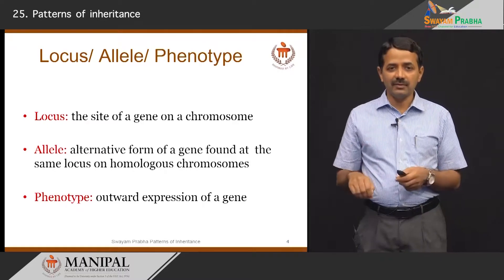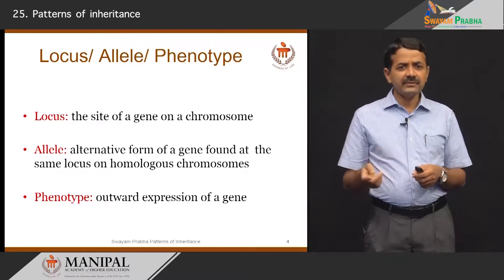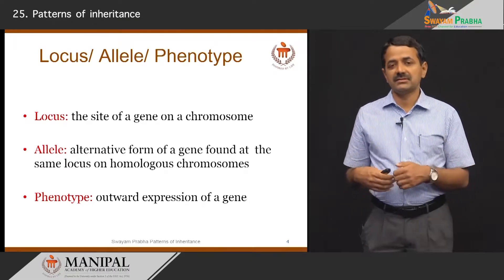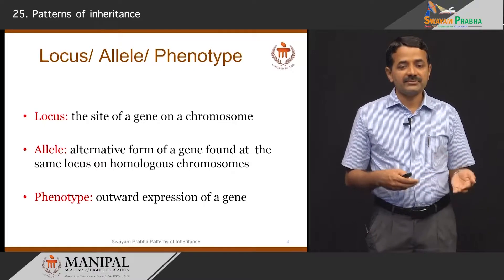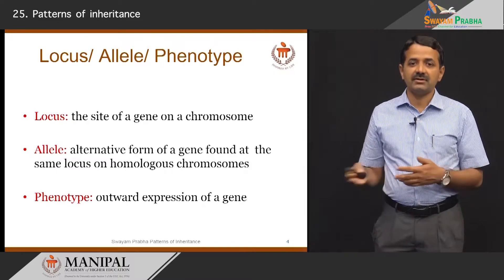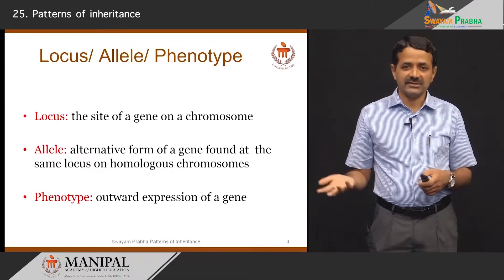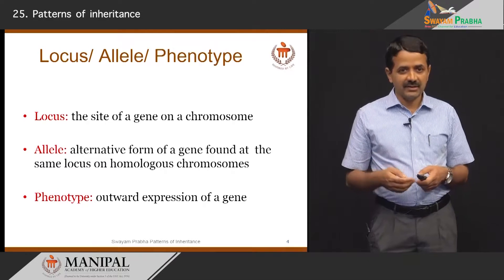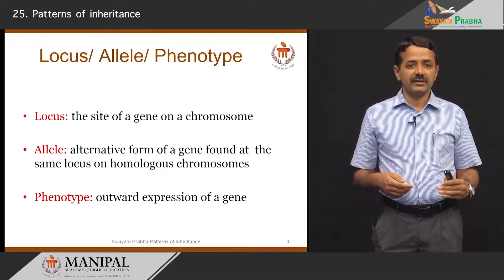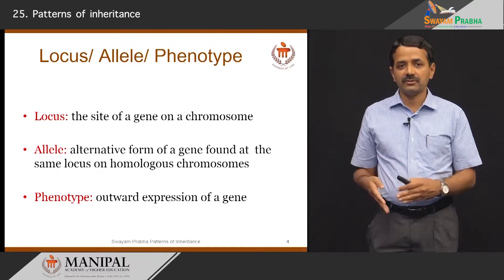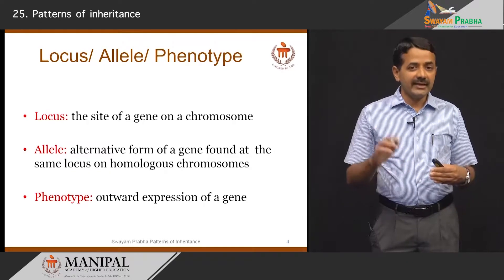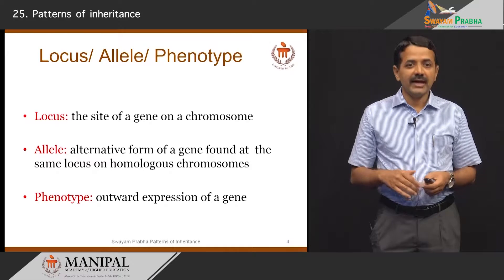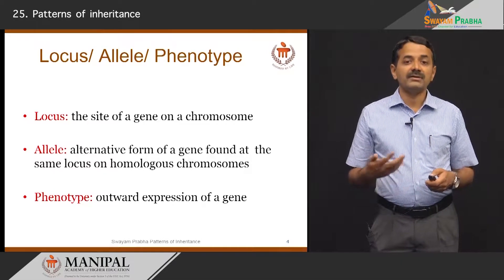We have two alleles for each locus; these two forms are called alleles. For any individual at a given locus, there are two alleles. Phenotype means the outward expression of a gene — the manifestation of a particular genetic change or gene. It is the manifestation of the disease or trait; it may be height, weight, or a disease. In the population there may be several alleles at a given locus, and phenotype is the outward expression or manifestation of the gene.